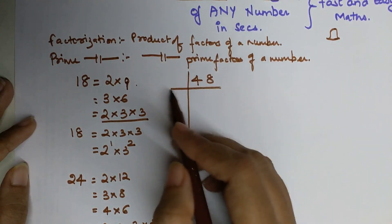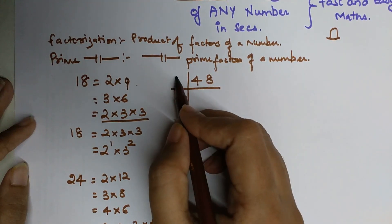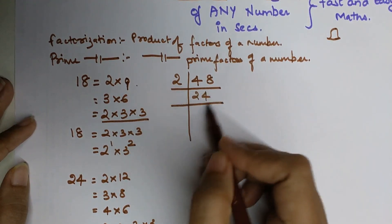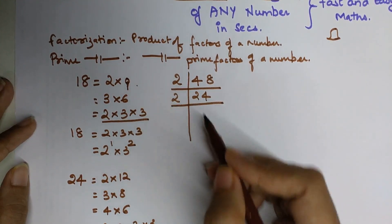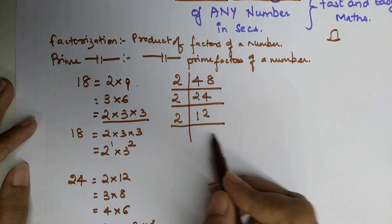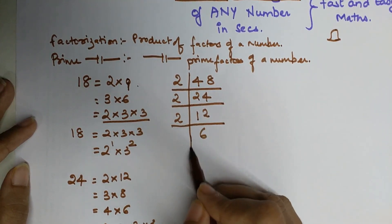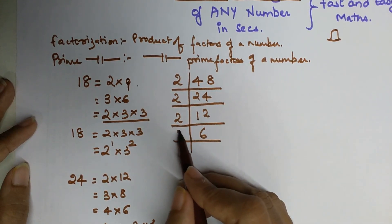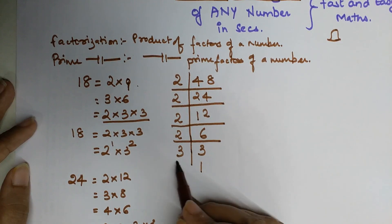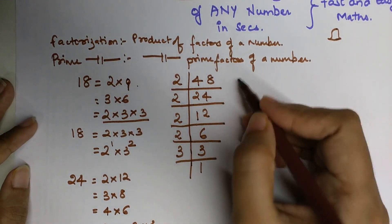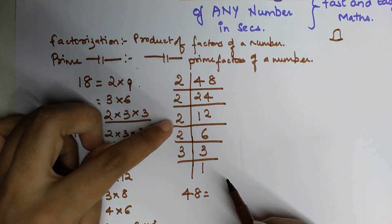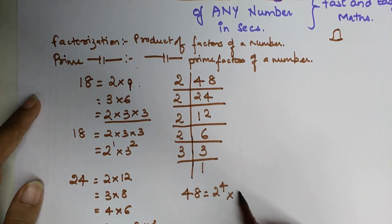You will start with the smallest divisible factor. Since 48 is an even number, you will start with 2. When 48 is divided by 2, the quotient is 24. 24 is also even, so divide again by 2 to get 12. 12 is even, so divide by 2 to get 6. 6 is even, so divide by 2 to get 3. Now 3 is a prime number, so 3 divided by 3 gives 1. So 2 is multiplied 4 times, giving us 2 raised to 4 into 3 raised to 1.